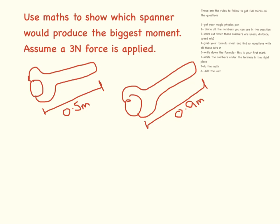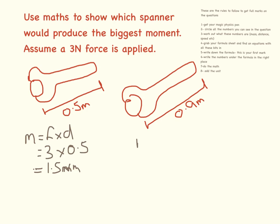Use maths to show which spanner will produce the biggest moment, with all the forces applied. Moment equals force times distance. I know it seems repetitive writing the equation down over and over again, but this is really good practice for your exam — the examiners do like to see this. For the first spanner: 3 Newtons times 0.5 meters equals 1.5 Newton meters. For the second spanner: moment equals force times distance, 3 times 0.9 equals 2.7 Newton meters.